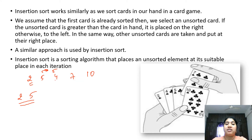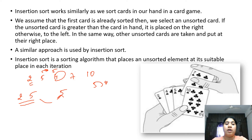Next I have considered the third card and I will be comparing with the previous card. As you see here 5 is greater than 4. So 5 should be moved to the third place and 4 should be compared with the previous card that is 2. 2 is lesser than 4 so 4 will come here. And you will have this sorted card sequence that is 2, 4, 5 and 7 and 10.